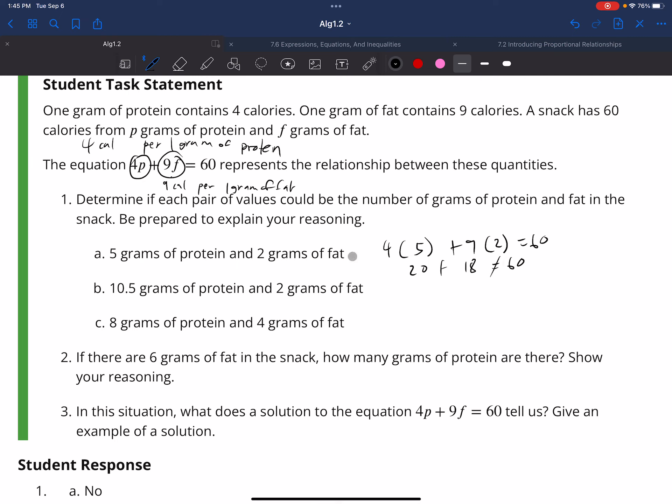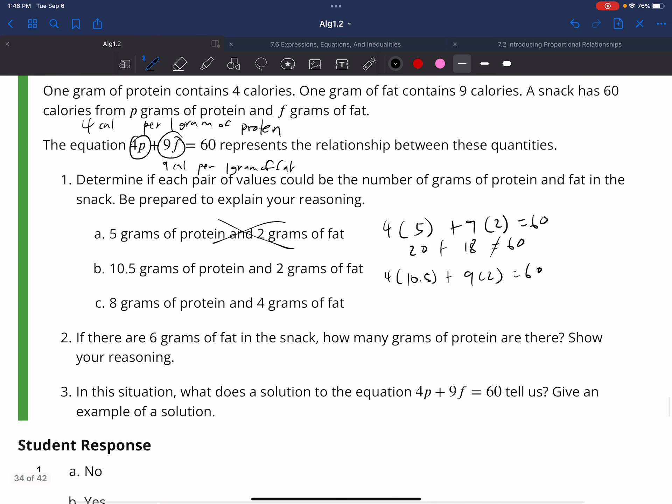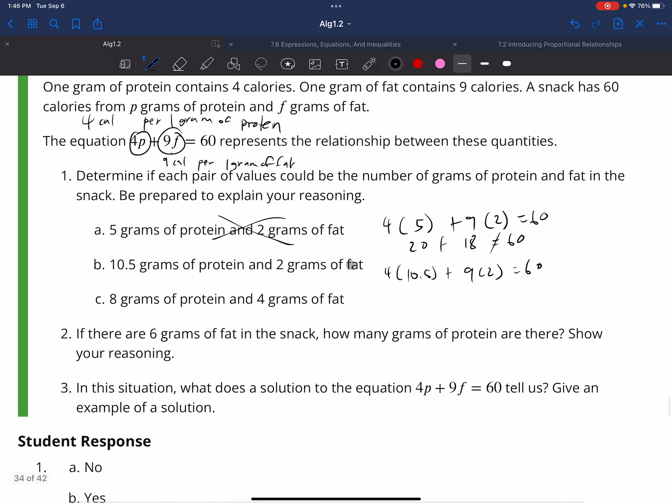How about 4 times 10.5 protein plus 9 times 2 equals 60. Well, let's take a look. 4 times 10.5 is going to be 42, and 9 times 2 is 18, is equal to 60. 42 plus 18 is equal to 60. 60 is equal to 60, so that works. So 10.5 grams of protein and 2 grams of fat, if I have them together, equal 60 calories.